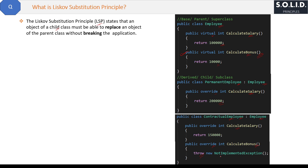Why are we throwing the error here? Because if we do not override the calculateBonus method and write no code, then by default the ContractualEmployee will automatically inherit the calculateBonus method of the Employee parent class — just like the PermanentEmployee class inherited it. And if anyone in future creates an object of the ContractualEmployee class, that object will be able to call calculateBonus, which we do not want. So to stop that, we override the method and throw the error.